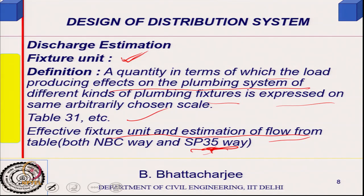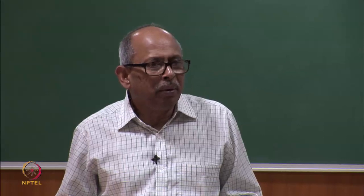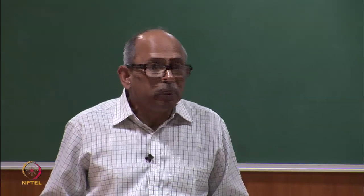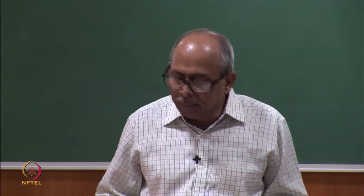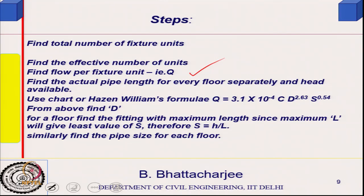SP 32 is for functional planning of buildings and industrial structures — the relevant reference is SP 35. From Table 31 of SP 35, you can get the effective number of fixture units. These are based on engineering experience. Once you know the total and effective fixture units, flow per fixture unit Q is known, and multiplying gives the total flow.